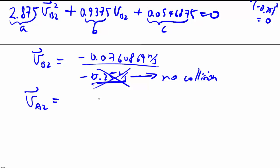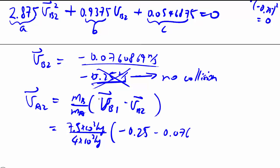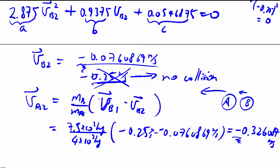Then VA2 we can work out is equal to what we had before which is MB over MA times VB1 minus VB2. And that's VA. And notice how both of these ended up negative. So in fact what actually happened afterwards as they finished colliding is A is moving back with a fairly big velocity but B is also moving back with a much smaller velocity.